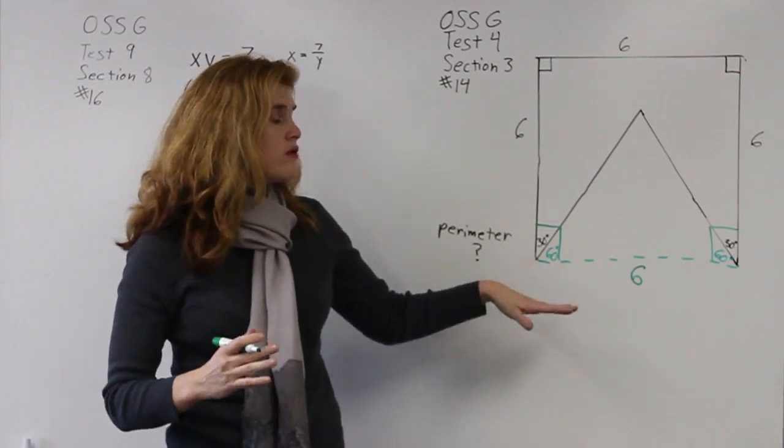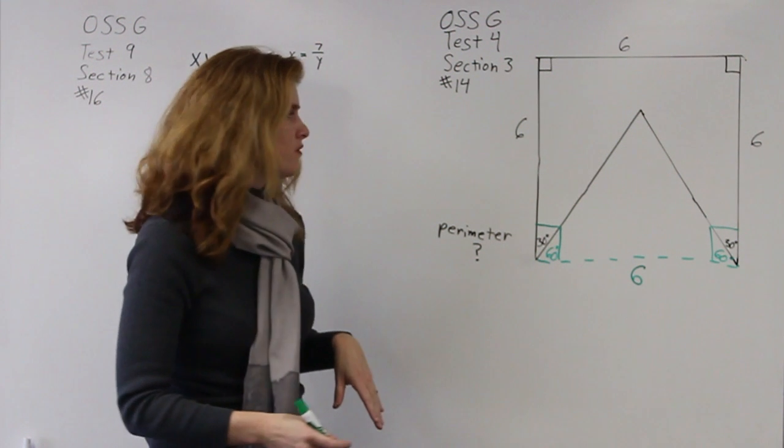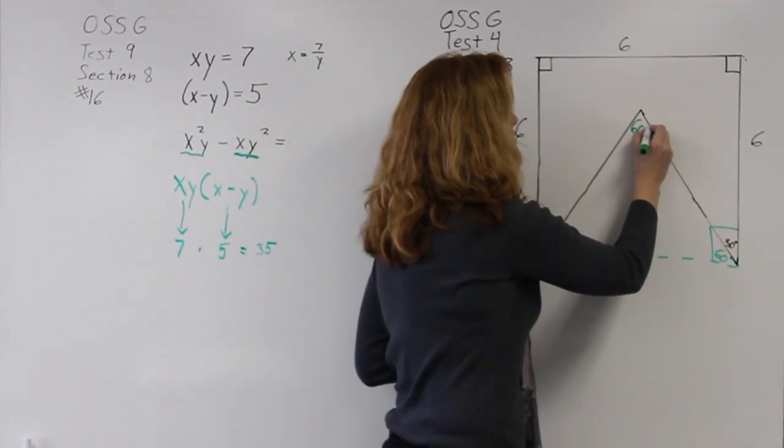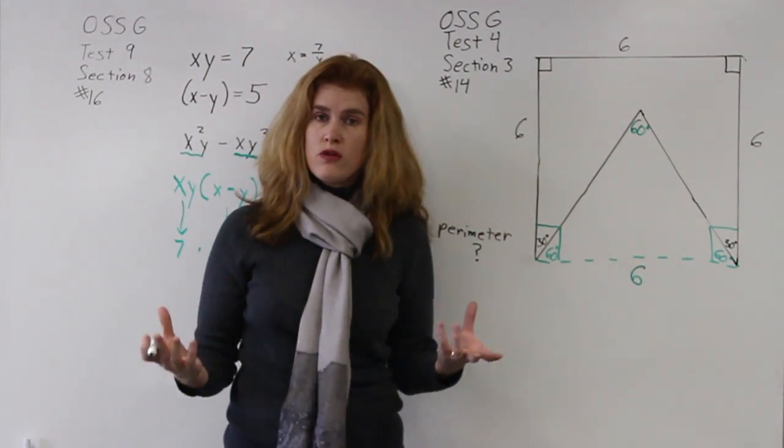Now thinking about another rule in geometry, because all of the angles have to add up to 180 degrees, my third angle is also 60 degrees. Now I have something that's called an equilateral triangle.